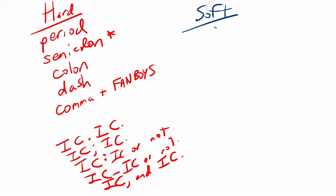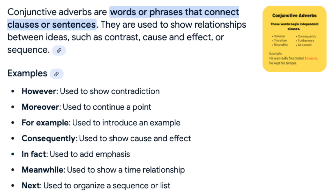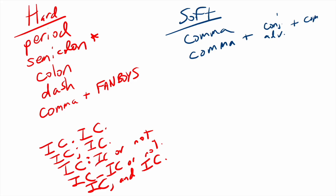The soft punctuation marks would include just the comma, and a comma plus a conjunctive adverb or transitional adverb. These are going to be words such as 'however,' 'therefore,' 'consequently,' 'additionally,' and so on. That's still not a way you can directly join two independent clauses. If we just have a FANBOYS conjunction with no punctuation — so just 'and' or 'but' — that would be soft. And nothing at all would also count as soft punctuation.